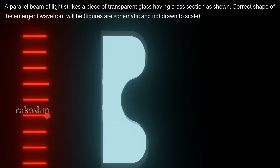Firstly, all these points here are in the same phase, so here we have planar wavefronts. He has not mentioned that this is vacuum, so we will take that this is vacuum and the speed of light is c. So from here to here, light will travel with speed c.